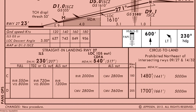On the right-hand side is once again a representation of the missed approach procedure, which we have discussed earlier. You can also see that the runway has PAPI lights installed on the left-hand side. The runway is also equipped with a high-intensity approach lighting system of configuration type 2.